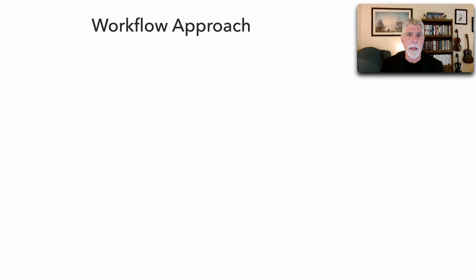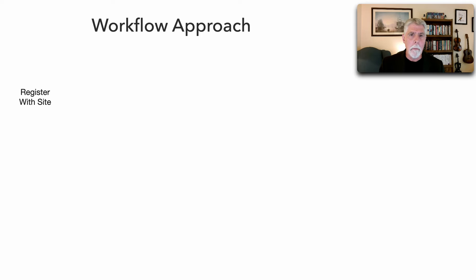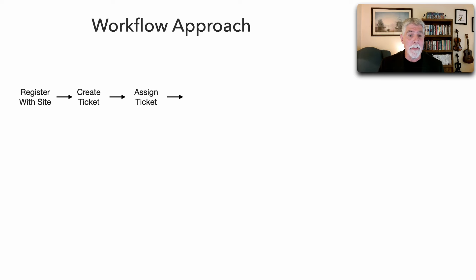We start with a blank slate and think about the overall major workflow. If you haven't looked at lesson 190, I'd recommend pausing and going back to watch that first, as it shows more details about the Sysop Squad case study. Customers first register with the site. Once they do, they can create a ticket if they have a problem. The system assigns a ticket, and that ticket gets routed to the expert's mobile device. Then the customer is notified that the expert is on their way.